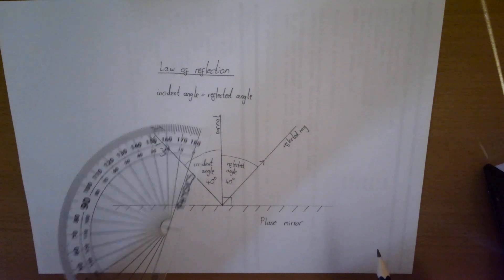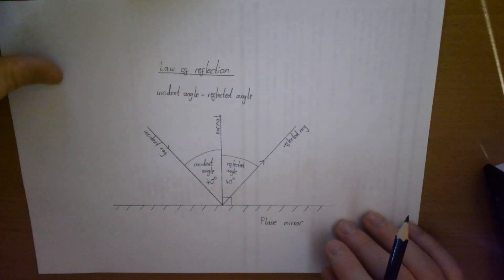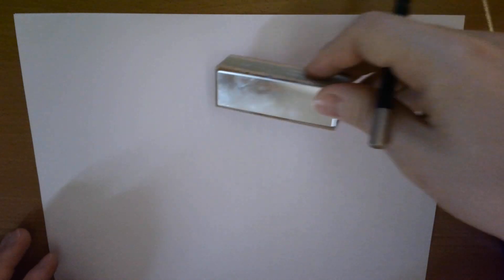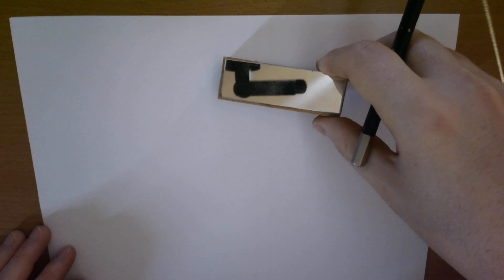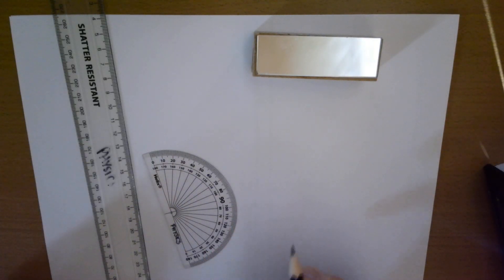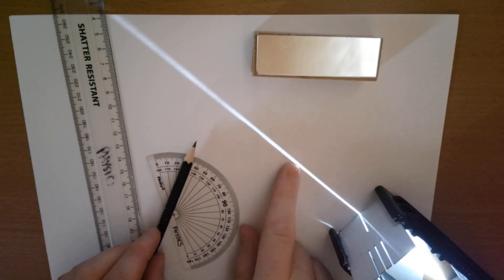I did this using a protractor, but we're going to verify that this does work. To do this practical, you are going to need a mirror, a protractor, a ruler, a sharp pencil, and a ray box with as thin a ray as possible.